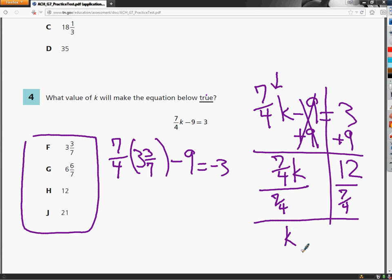And you can do that in the calculator. Or you can use the keep it, flip it, switch it thing. Where you do 12 over 1 times flipped over fraction would be 4 over 7. And you end up with 48 over 7. And you reduce the fraction. 7 goes into 48 6 times with a remainder of 6. So 6 and 6 sevenths. So the answer is going to be g.